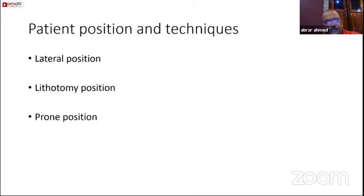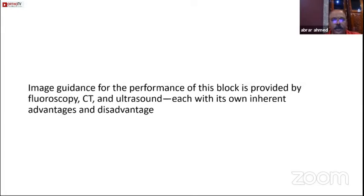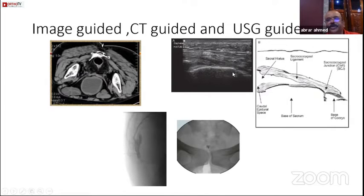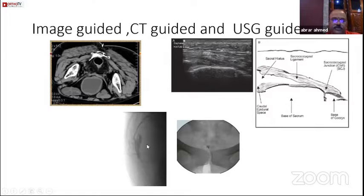The key types of techniques which have been described: one is the lateral position, second is the lithotomy position, but most commonly nowadays what we use is the prone position. We can use fluoroscopy — which is what we use in our practice — but it can also be done under CT and ultrasound guidance. These are examples of CT-guided ganglion block and this is the ultrasound-guided approach. Most commonly, what we use is the fluoroscopy-guided ganglion impar block.